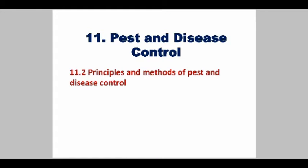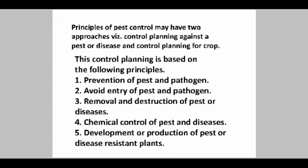Let's talk about the principles and methods of pest and disease control. Sustainable pest management depends on knowledge of the strategy, pest biology, and the pest ecology of the agro-ecosystem. The development of an active pest control strategy is reliant and contingent on different types of methods.